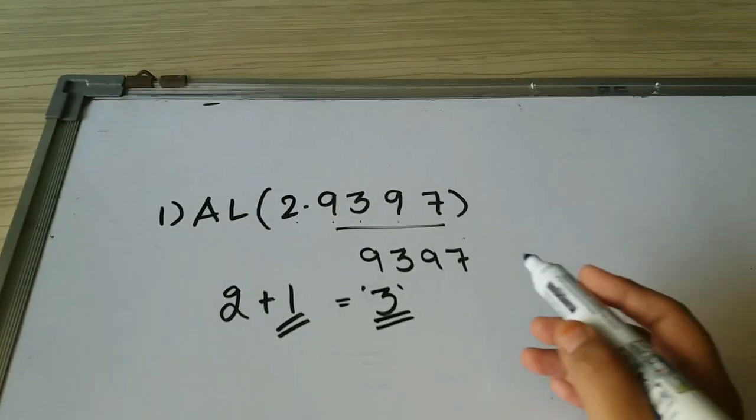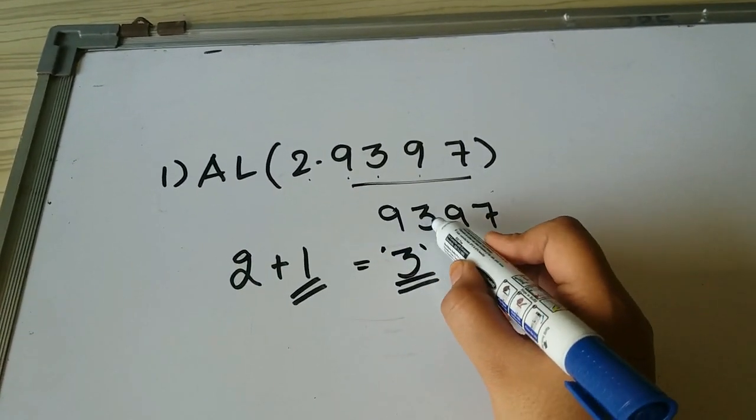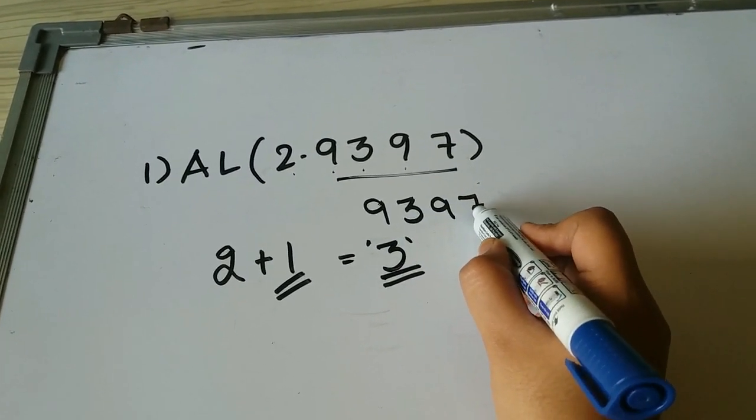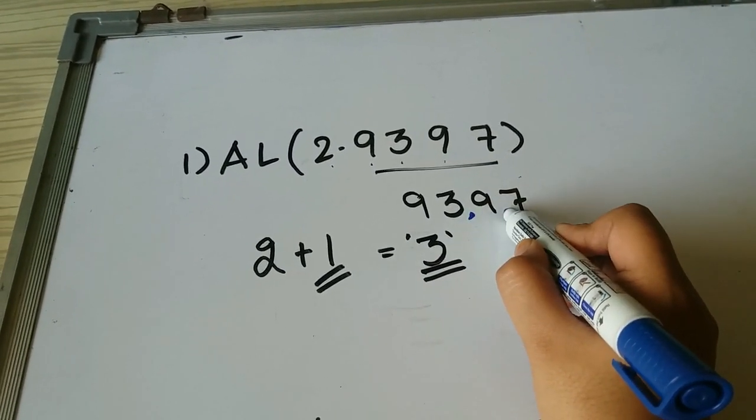Again to find antilog I have to go in 2-1-1 pattern: 2 digits, 1 digit, and 1 digit pattern. So 93, 9, and 7.